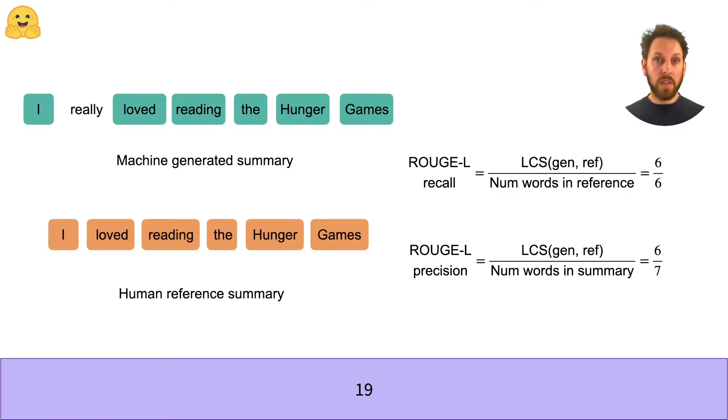The last ROUGE variant we'll discuss is ROUGE-L. ROUGE-L doesn't compare n-grams, but instead treats each summary as a sequence of words and then looks for the longest common subsequence, or LCS. A subsequence is a sequence that appears in the same relative order, but not necessarily contiguous.